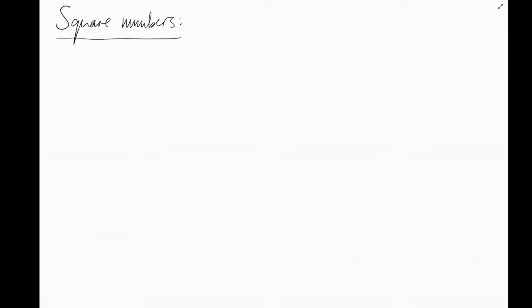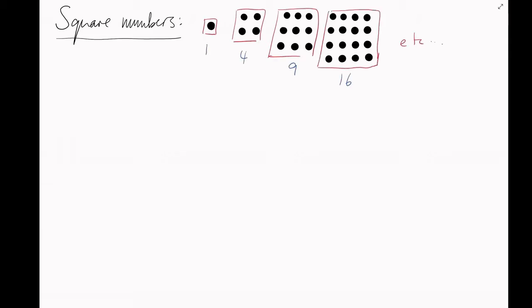The square numbers are so-called because they are the number of dots in a square. If we take squares of side lengths 1, 2, 3, 4, and so on, we get the familiar sequence starting 1, 4, 9, 16.